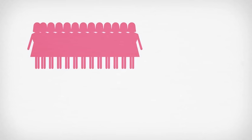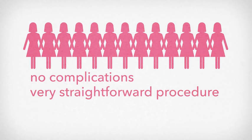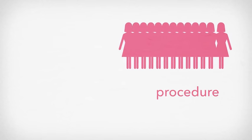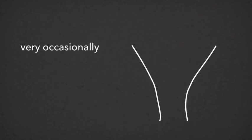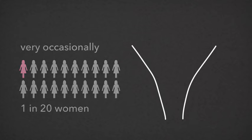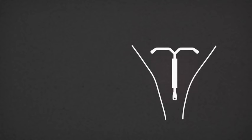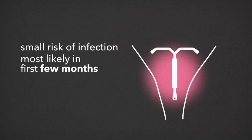Most women have no complications and find having an IUD or Mirena fitted a very straightforward procedure. But, very occasionally, the IUD or Mirena can fall out of the womb. This happens in around one in twenty women. There is a small risk of infection, and this is a little more likely in the couple of months after having the device fitted.